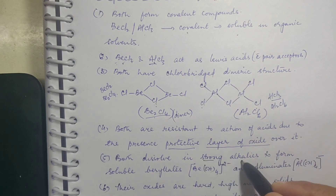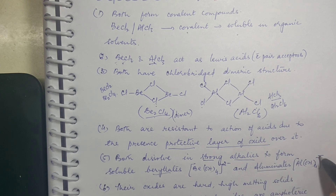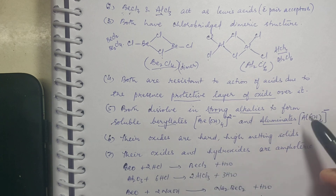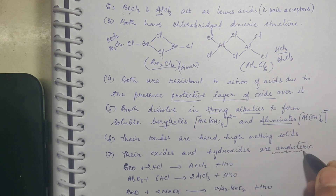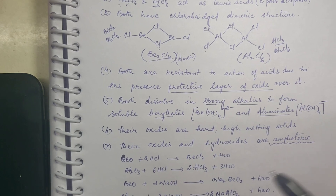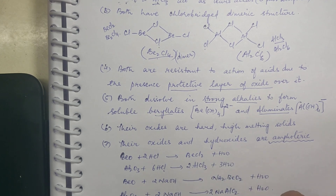Both beryllium and aluminium dissolve in strong alkalies to form their corresponding berylates and aluminates: AlOH4⁻ (aluminate) and Be(OH)4²⁻ (berylate). Their oxides are hard, high-melting solids. These oxides and hydroxides are amphoteric — aluminium oxide is amphoteric, as studied in 10th grade, and beryllium oxide is also amphoteric, reacting with both HCl and NaOH to give the corresponding salts.